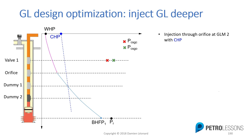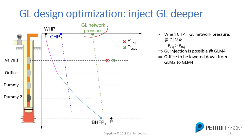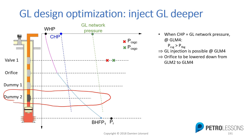In purple is the portion of the tubing lightened by the gas lift injection, and in blue is the portion where I have a fluid gradient corresponding to the reservoir fluid. I have injection through the orifice at gas lift module number two, and my casing pressure is the blue profile shown. In green is the available gas lift network pressure profile in the casing. At the depth of gas lift module number four — where I have a dummy installed — my casing pressure is much higher than the tubing pressure, meaning the gas lift network pressure would actually allow me to inject gas lift through that fourth module.